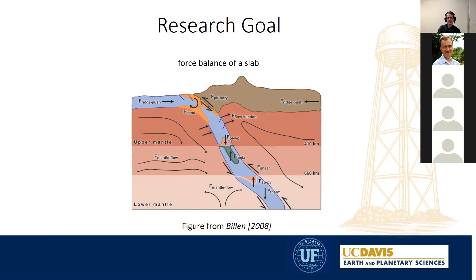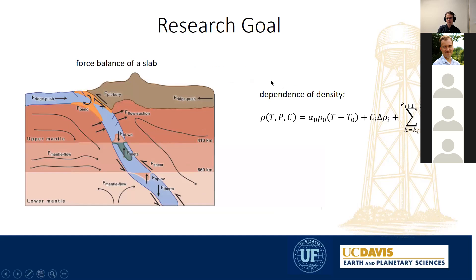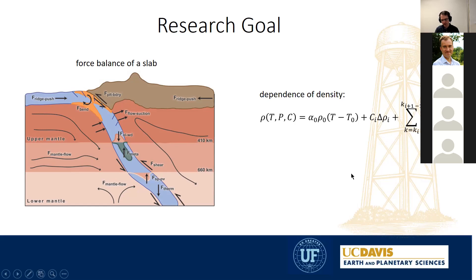We want to combine this with a phase transition of the basaltic composition of the crust to eclogite transition, and model it consistently with the viscosity feedback. This brings us to implement a dependence on phases. As you can see here in the example of density, I have to take great care writing this. The first two contributions are what we have in ASPECT — namely temperature and pressure conditions — and the third one is what we are going to add: a phase-dependent term.